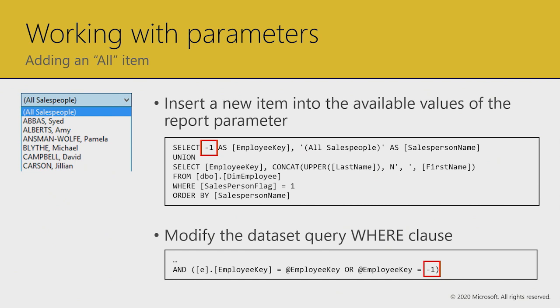You need to prepare the dataset that retrieves report data for what it's going to do when it receives minus one. The WHERE clause filters on employee key equals the query parameter employee key, or employee key equals minus one. At query time, that gives you the option to select either all employees or just an individual employee. If the employee key is minus one, because of the OR, it returns all of them.